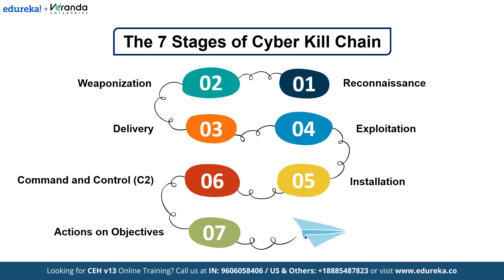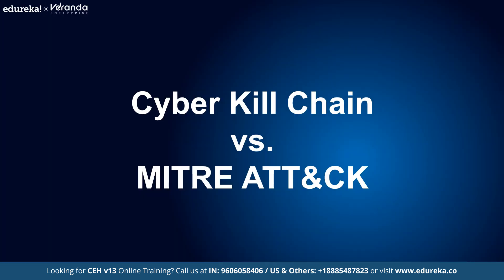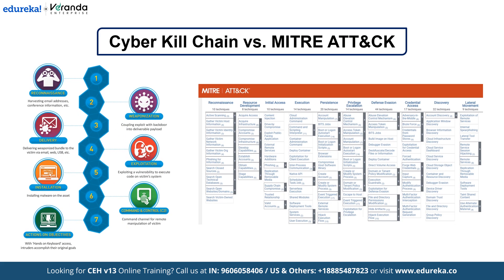While the cyber kill chain provides a strong foundation, it's not the only framework available. One of the most popular comparisons is with the MITRE ATT&CK framework. The cyber kill chain has a linear structure with 7 stages, while MITRE ATT&CK is more flexible and focuses on tactics and techniques in no specific order. The cyber kill chain provides a high-level overview, whereas MITRE ATT&CK examines the granular details of attack execution. Both are valuable, but the choice depends on your organization's needs and threat landscape.